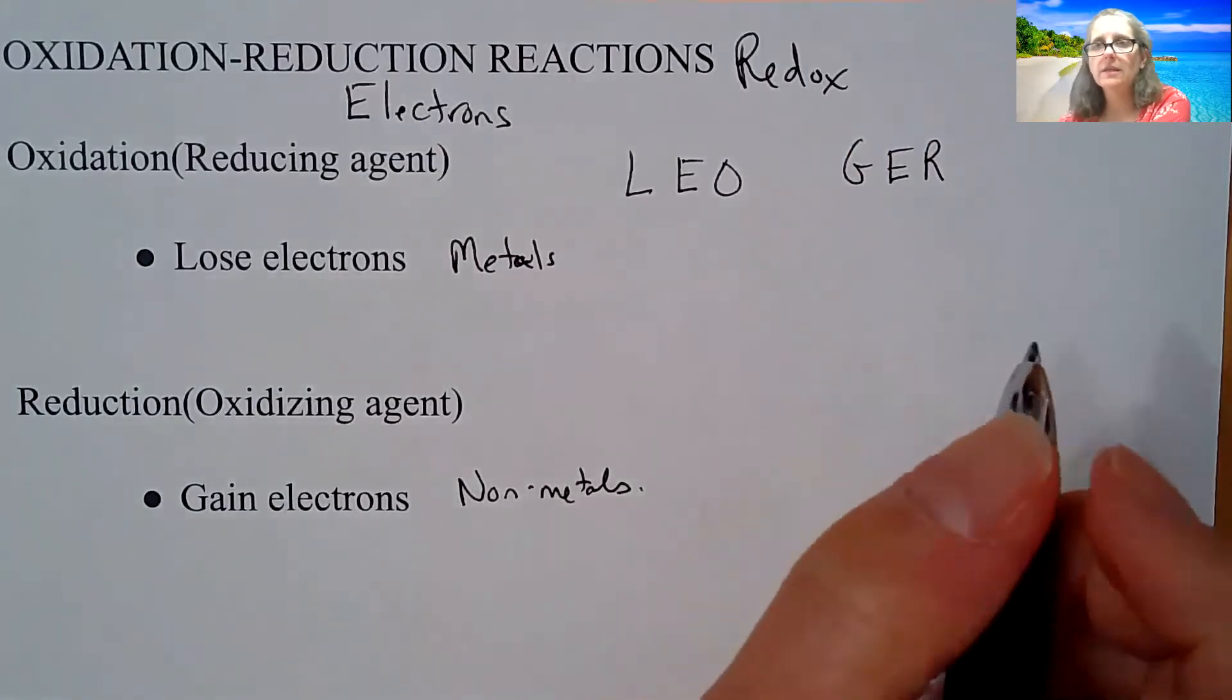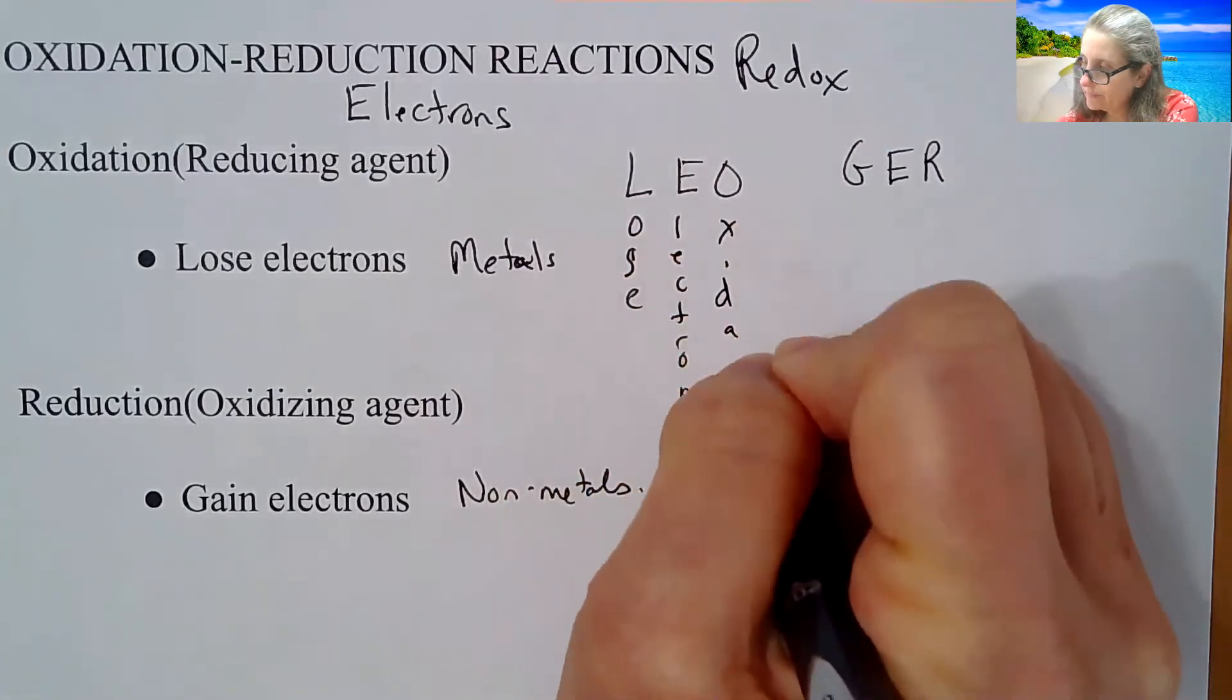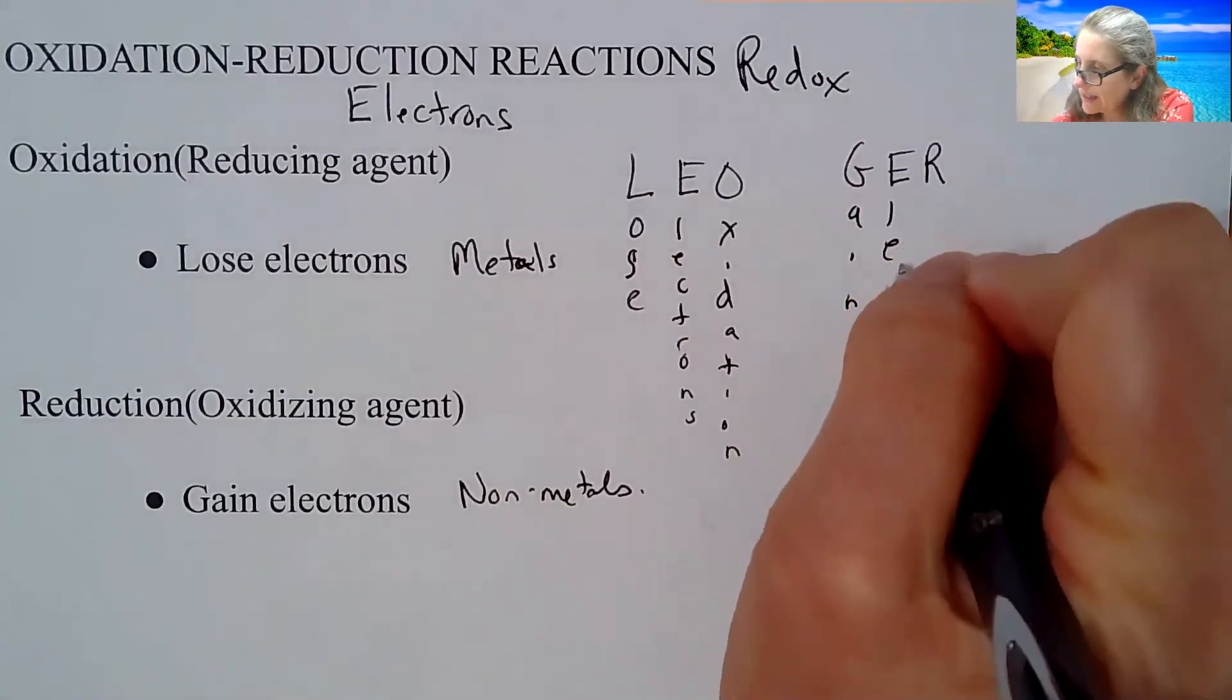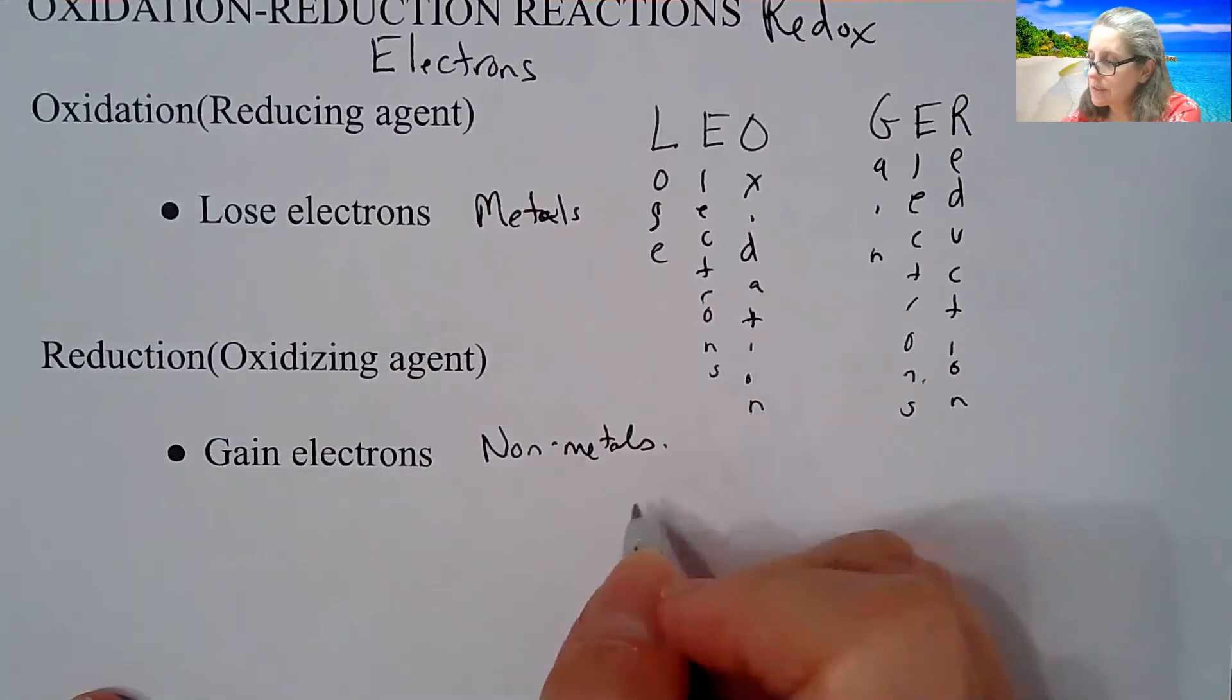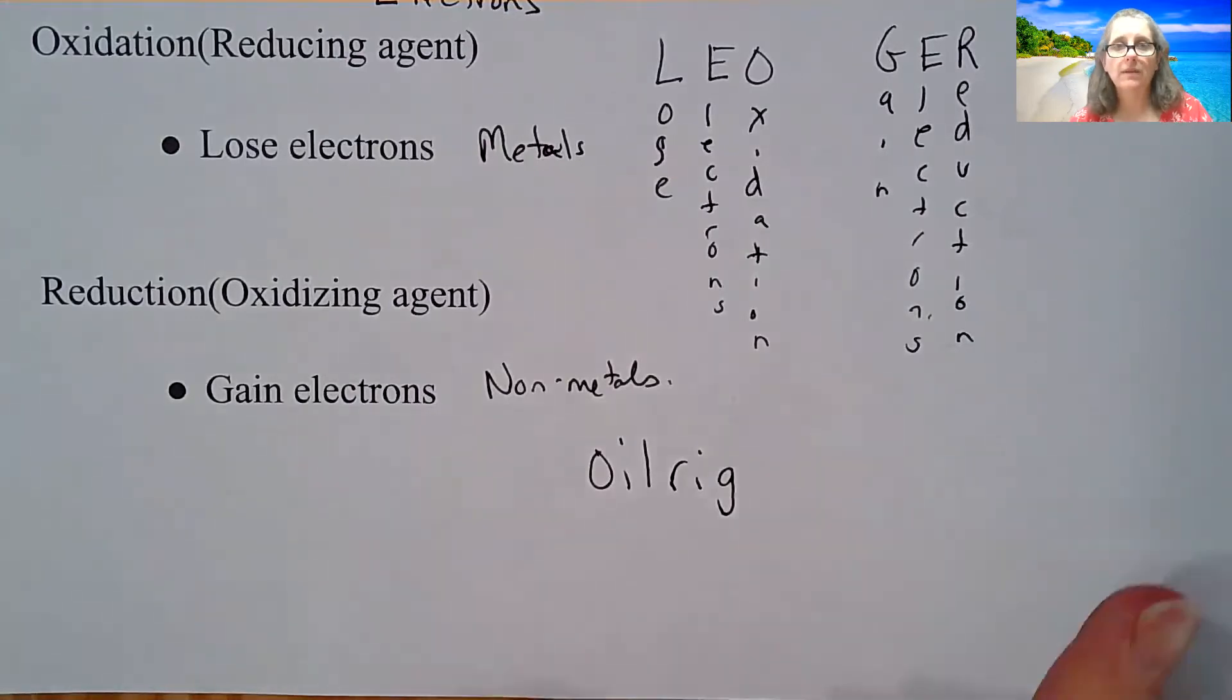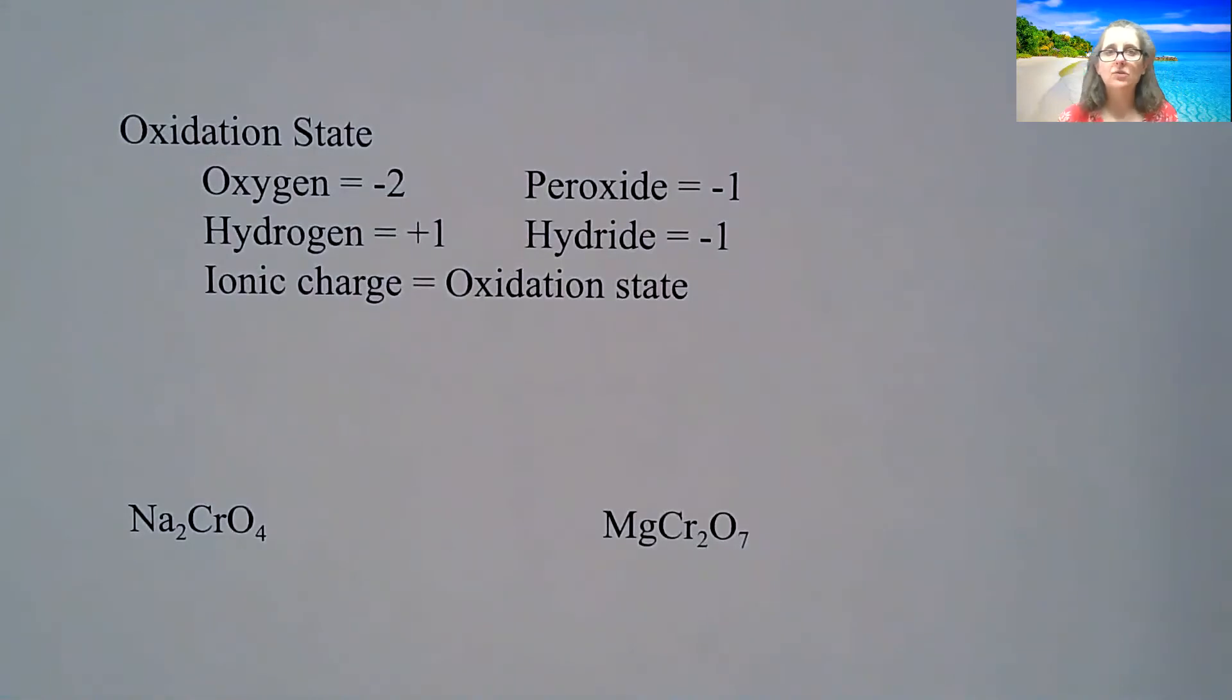So Leo stands for losing electrons is oxidation. And the sound of Leo the lion goes is ger. I know it's a little bit of a stretch. You are gaining electrons. And maybe again, if you remember silly things, maybe that will help you to remember it. So ger stands for gaining of electrons is reduction. Another one some students like is something called oil rig. Oil rig stands for oxidation is loss, reduction is gain. Since we know it's always talking about electrons, I don't need to say anything more than that. So you do need to know oxidation is loss, reduction is gain.